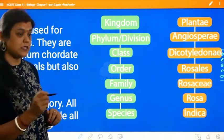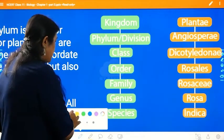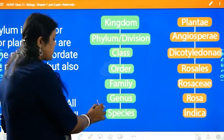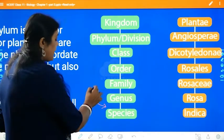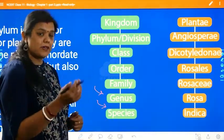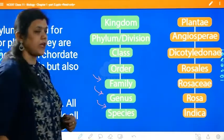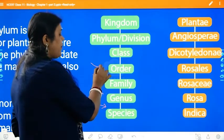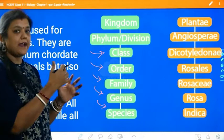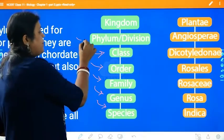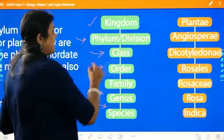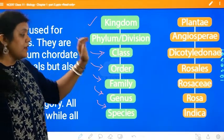Each individual organism is considered as a species. The first category is species, followed by genus — when similar species are put together. Similar genera form a family, similar families make an order, similar orders make a class, similar classes make the phylum or division, and the phylum or division ultimately makes the kingdom.